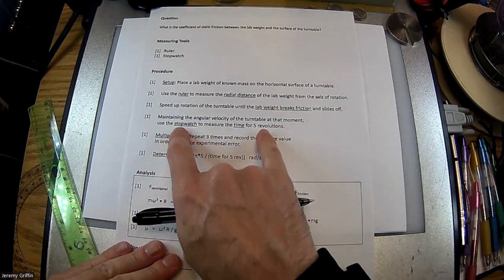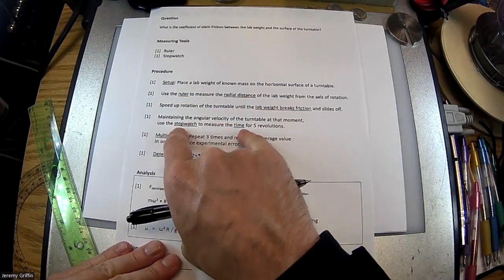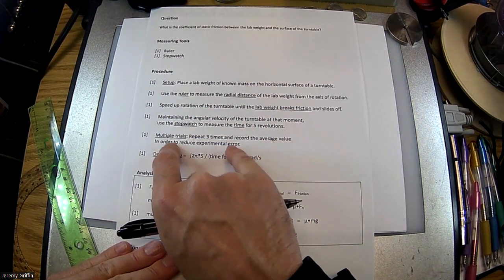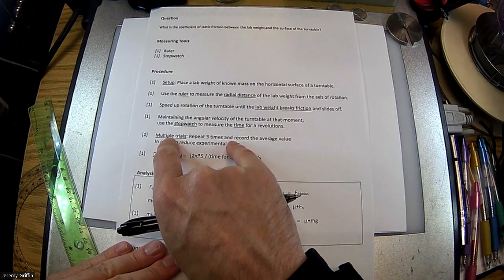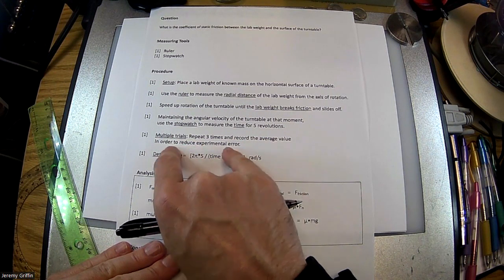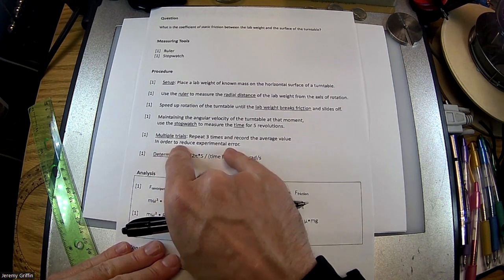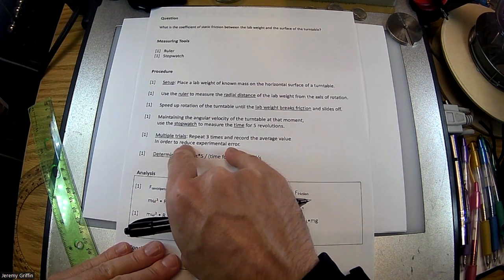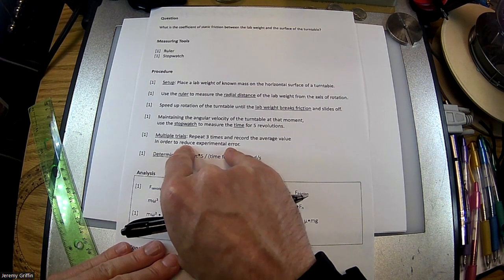All right. So, we got radial distance, we got time, multiple, multiple trials. Repeat three times and find an average value in order to reduce experimental error. So, guys, do you have something about multiple trials? Because that's always going to be a point on this free response question. You're going to get an experimental design question, you're going to have to write a procedure, and one of the points is always multiple trials to reduce experimental error.